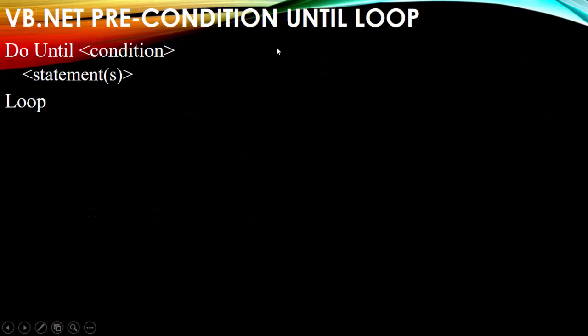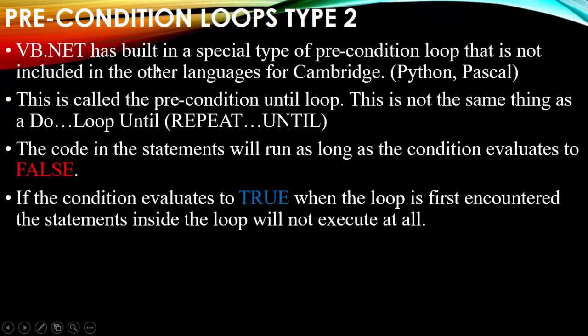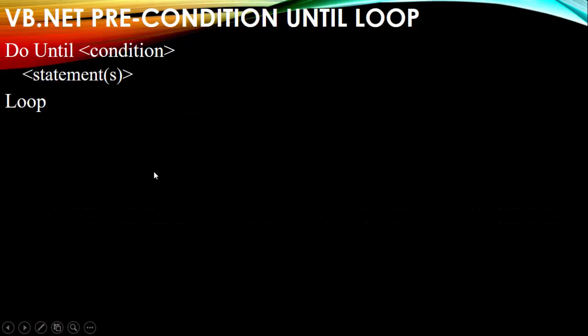Here's the VB.NET precondition Until loop: Do Until this condition — these statements — Loop. The statements run as long as the condition evaluates to false. When the condition becomes true, it exits. Do these statements until we reach this condition — once the condition is true, we exit. That is the second type of precondition loop.